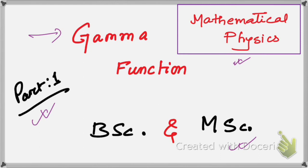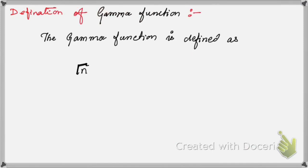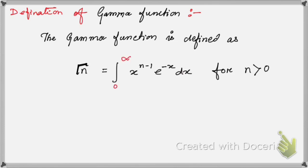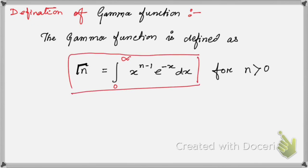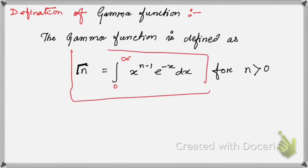Now let's start with the definition. The gamma function is defined as Γ(n) by this integral, for n greater than 1. This is the definition of the gamma function and we're going to use this definition in solving problems.